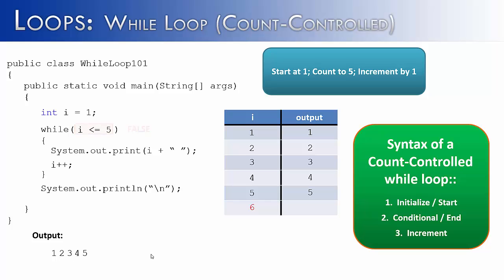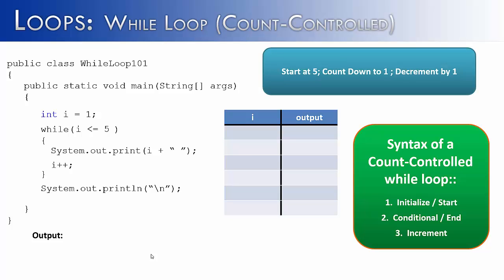Now let's set up a different scenario. What if instead of starting at 1 and counting up to 5 incrementing by 1, I wanted to start at 5, count down to 1, and decrement by 1? So I change int i equals 1 to int i equals 5, change the condition from i less than or equal to 5 to i greater than or equal to 1 since I'm counting down, and change i++ to i-- because I'm going down instead of up.